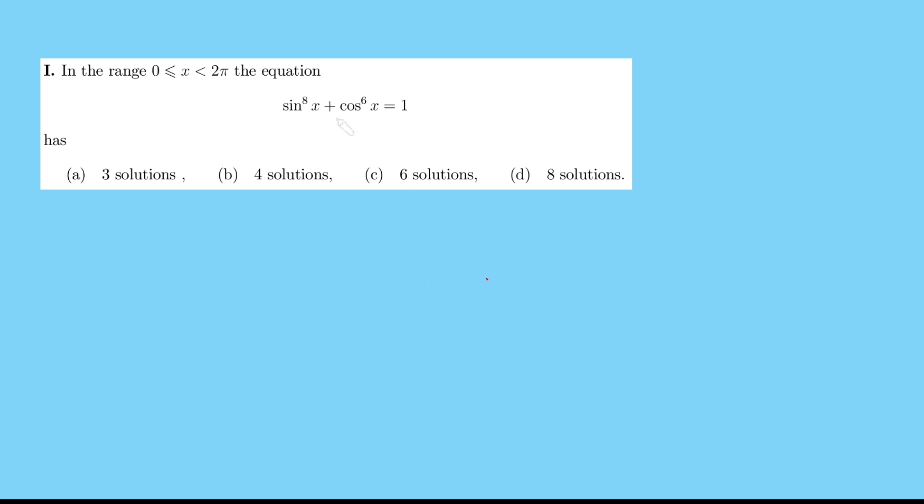We want to know how many solutions does this equation here have, sin to the 8x plus cos to the 6x equals 1, and x is somewhere between 0 and 2 pi.